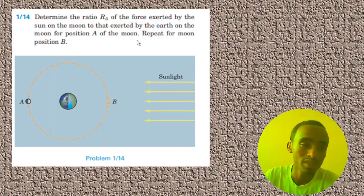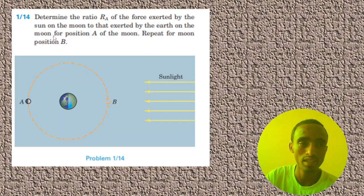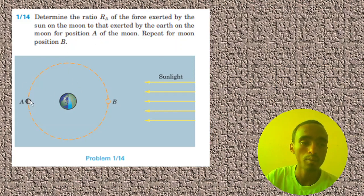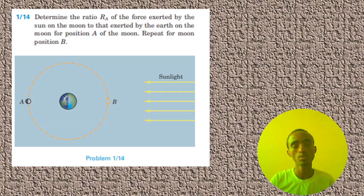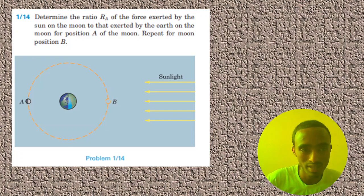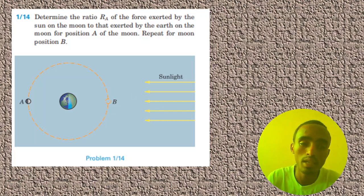For today we will solve this problem. As you can see here, question number 14 says: determine the ratio Ra of the force exerted by the sun on the moon to that exerted by the earth on the moon for position A of the moon, and repeat for position B. Here we can see the moon is exerted a force by the sun and also by the earth, and we are asked to determine that ratio at point A and at point B.